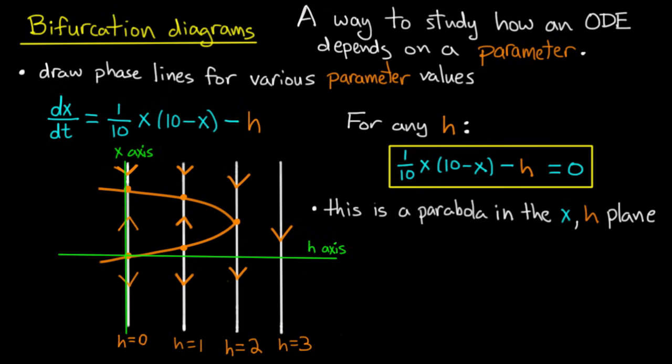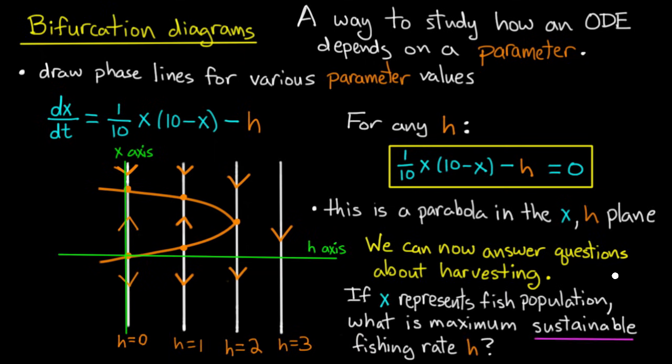And in fact we can answer some questions about harvesting rates. Now let's suppose, just to make things a little more real, that x represents a population of fish, let's say in some lake. So that means without any harvesting, that the population of fish is governed by a logistic model, given here.